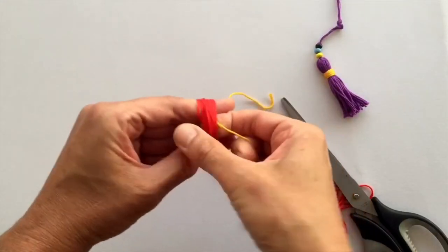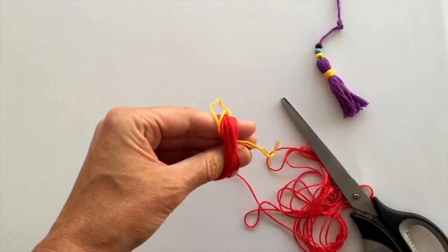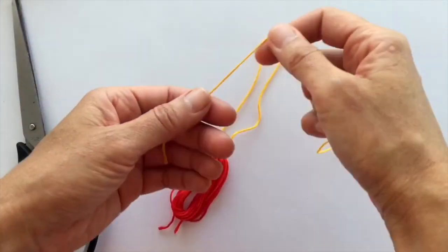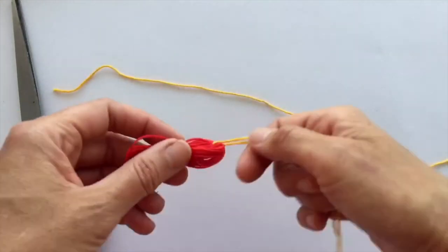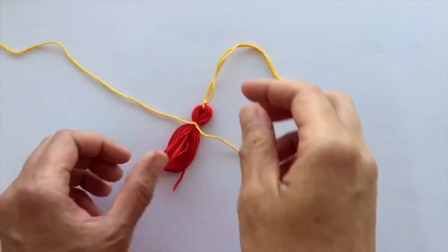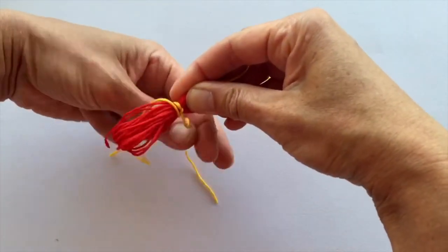Cut a piece of thread about three times your hand and make a knot close to the top. Wrap the thread around and make a double knot.